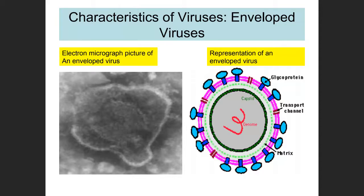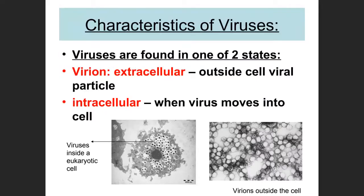Viruses exist in two states. A virion is the extracellular viral particle — the entire virus outside the host cell. The intracellular form is the actual virus replicating inside a cell. While technically these require different terms, we commonly use 'virus' indiscriminately for both the infectious agent inside and outside the cell. Technically, though, the virion refers only to the virus outside the cell.